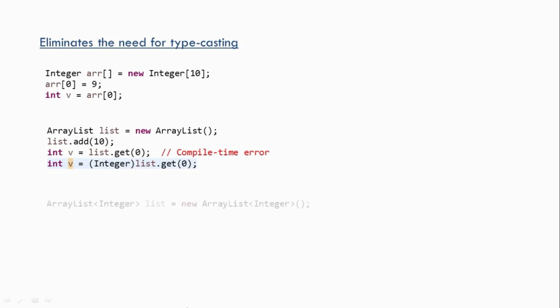But if you create a generic version of ArrayList — an ArrayList of integer — when you retrieve the data there is no need for typecasting. You can directly access the data similar to a normal array. So that is the benefit we get by using generics. These are the two main benefits of using generics. Thank you for watching and see you in my next tutorial.